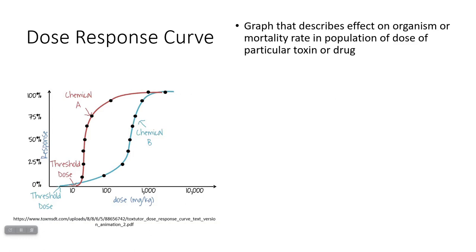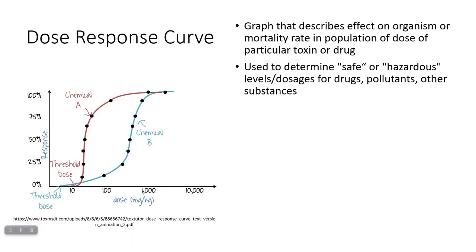You can give animals or organisms varying doses of a chemical and measure their response — whether that's death or some sort of sickness. When you graph that, it creates something called a dose response curve, which you can use to figure out the LD50 if you're looking at mortality, and to make observations about the toxicity of a chemical. These dose response curves are also used to determine what's considered a safe concentration in environmental regulations, and for pharmaceutical drugs as well.